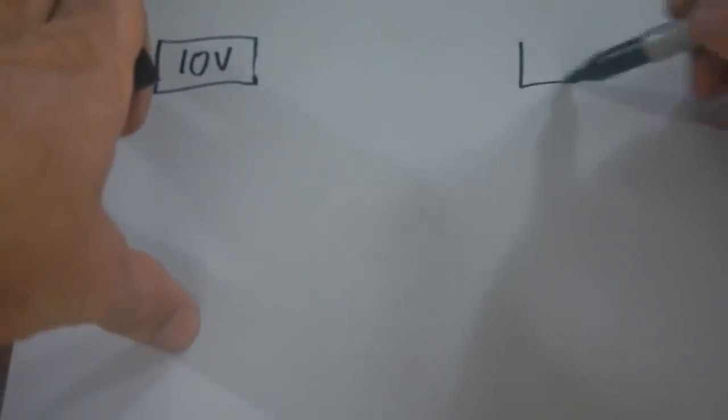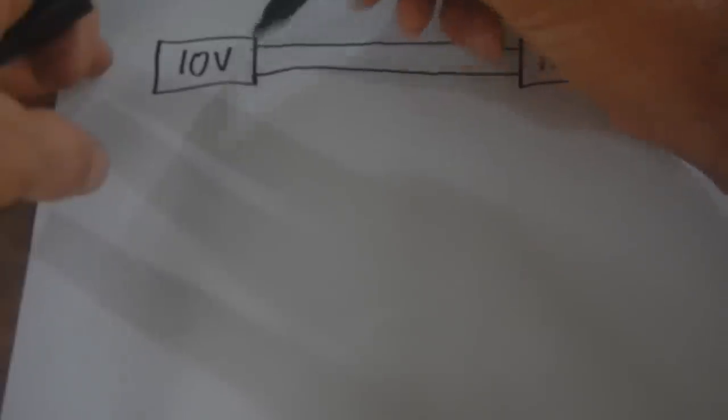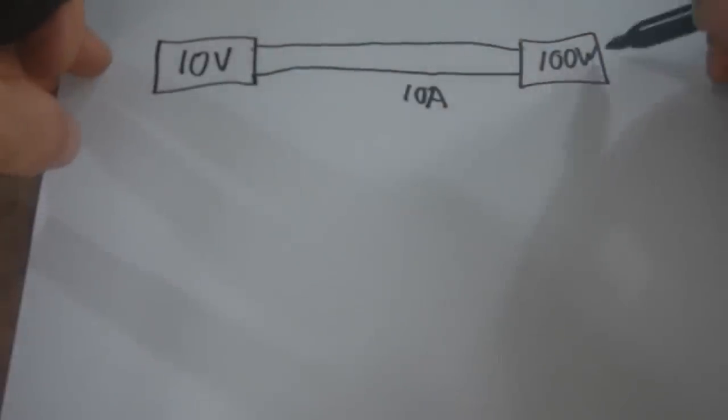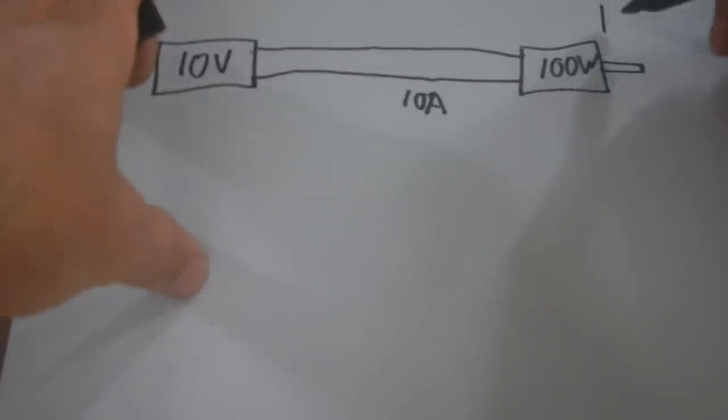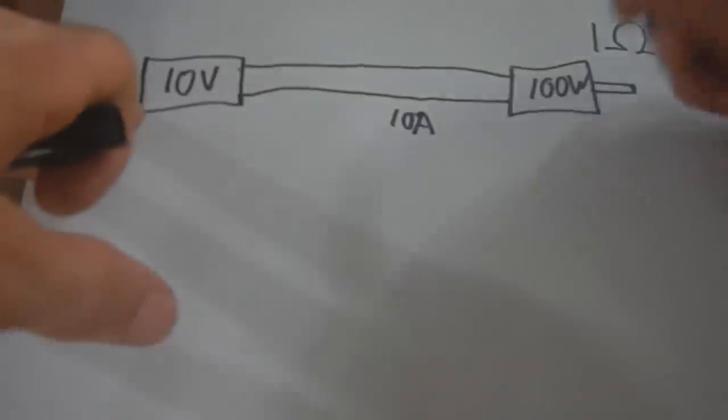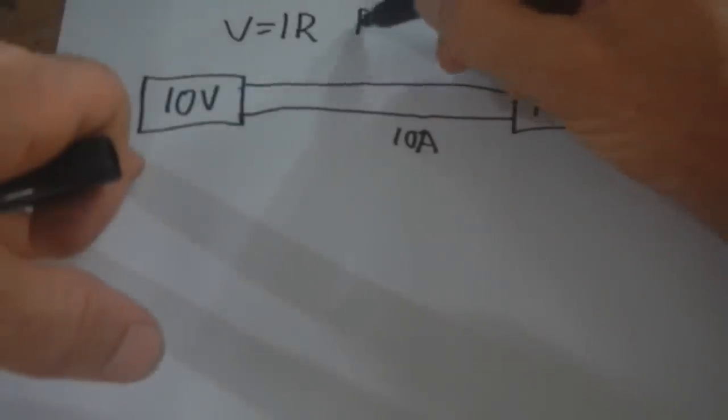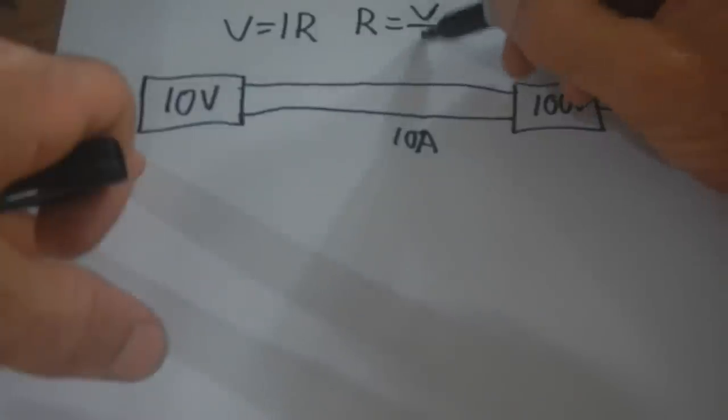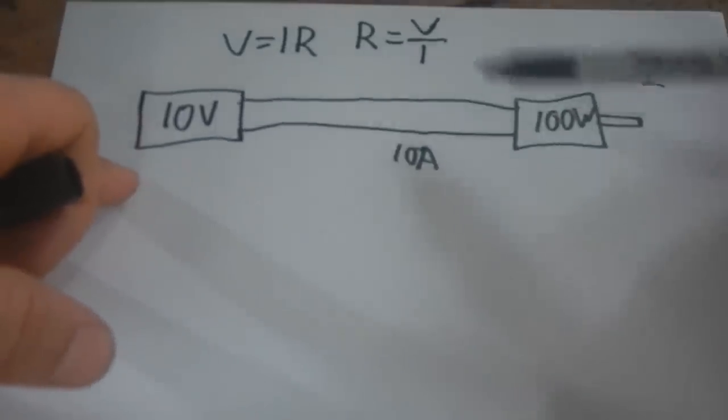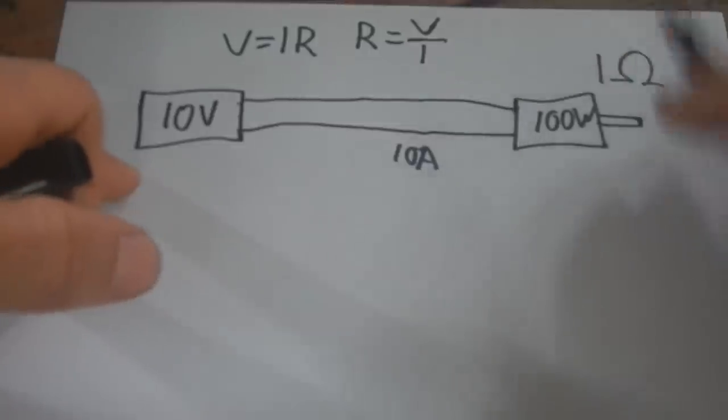We've got a battery here—let's make this a 10 volt battery. Over here we've got a 100 watt motor. When connected directly, there will be 10 amps going through because 10 volts times 10 amps equals 100 watts. This makes the resistance on this motor 1 ohm, which will make the math really easy. The way you know this is 1 ohm: voltage equals current times resistance, so resistance equals voltage over current. So 10 divided by 10 equals 1.